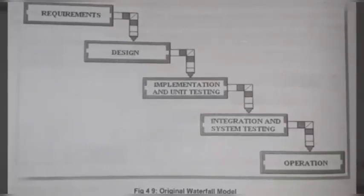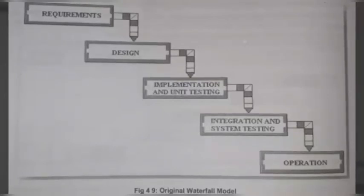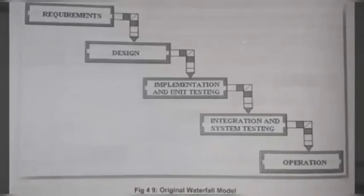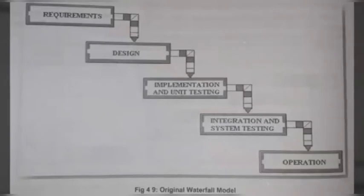Some phases we will learn. System feasibility: as software is a part of the large system, the work begins by establishing requirements. So the first requirement we will know is what we need.